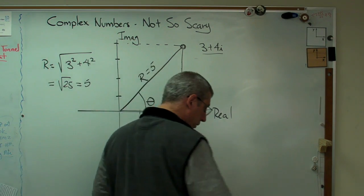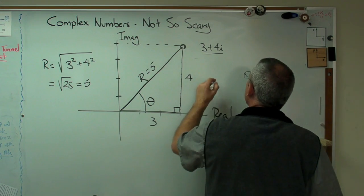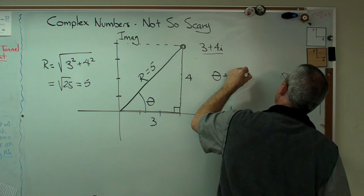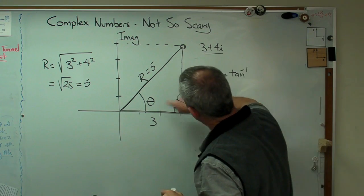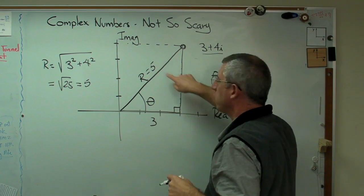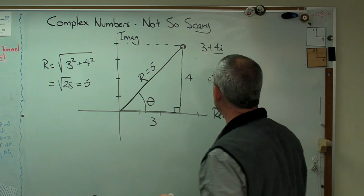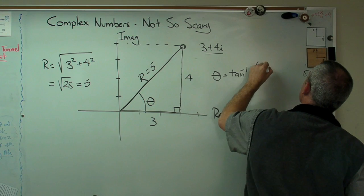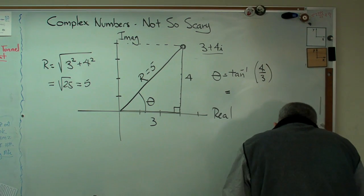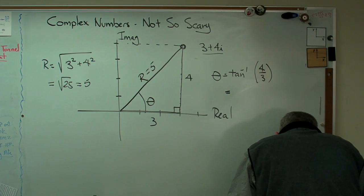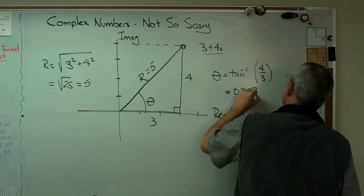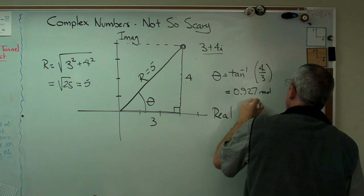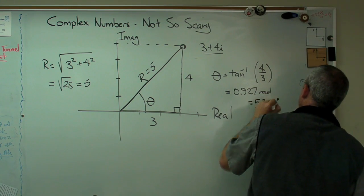The last thing you need there is the angle, theta, and theta is the inverse tangent of that divided by that. Or, it's the inverse cosine or inverse sine, whatever you want to use. Inverse tangent's convenient. So, it's 4 over 3. And that turns out, I've got to use my cheat sheet here. That turns out to be 0.927 radians or 53.13 degrees.